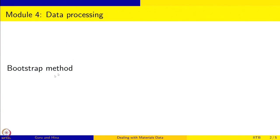Welcome to dealing with materials data. We are looking at the collection, analysis, and interpretation of data from materials science and engineering. We are in the module on data processing, and in this session we are going to talk about the bootstrap method, which is one of the methods to get the accuracy or estimate of quantities without actually knowing anything about the probability distribution.